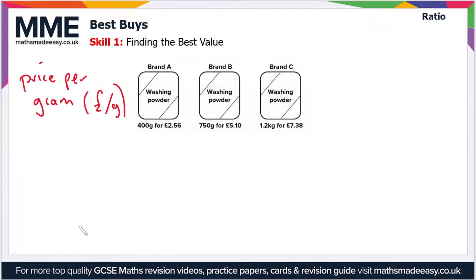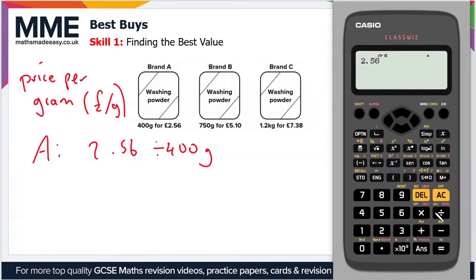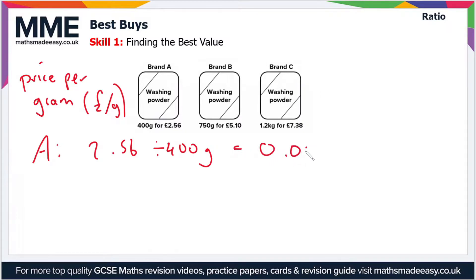For Brand A we've got £2.56 for 400 grams. To get the price per gram we divide £2.56 by 400 grams. Putting this into the calculator: 2.56 divided by 400 gives us 0.0064. This might seem like a strange amount, but it's fine for price comparison purposes. Our units here are pounds per gram.